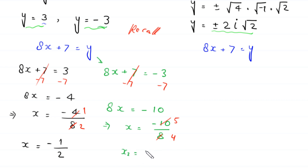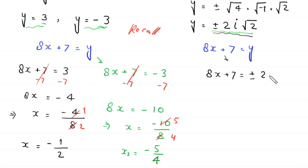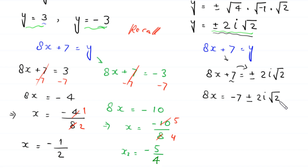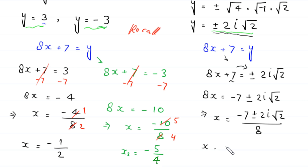When y=±2i√2: 8x+7=±2i√2. Moving 7 to the right side gives 8x=−7±2i√2. Dividing both sides by 8: x = (−7 ± 2i√2) / 8, which simplifies to x = −7/8 ± (2i√2)/8 = −7/8 ± i√2/4.